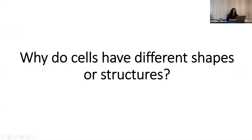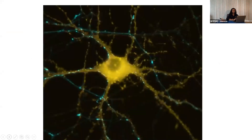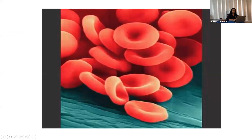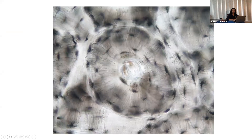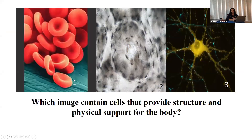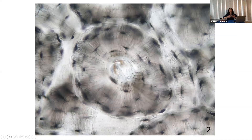Now we look at our first image — image one. This is the second image. And this is the third image. I've numbered them so that it's easier to answer this question. So which image contains cells that provide structure and physical support for the body? Is it the cells in image one, image two, or image three? It's image two. Image two is a picture of bone tissue. In this image, you see the osteon and the cells — the osteocytes — within this image.